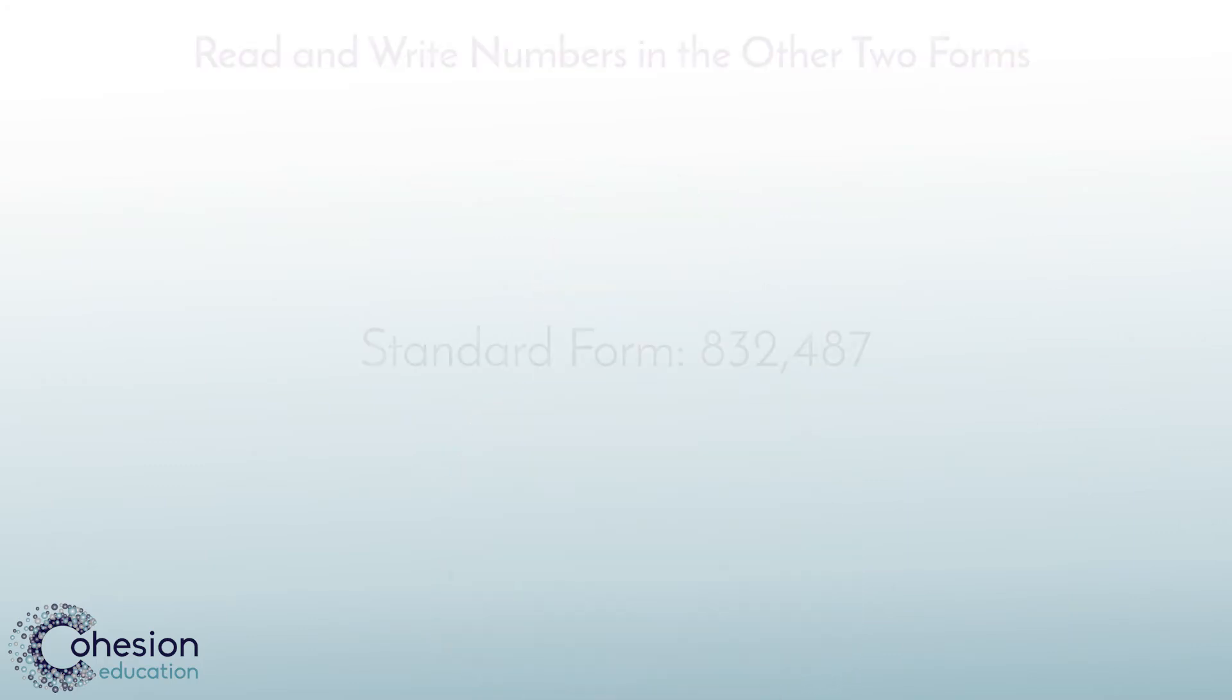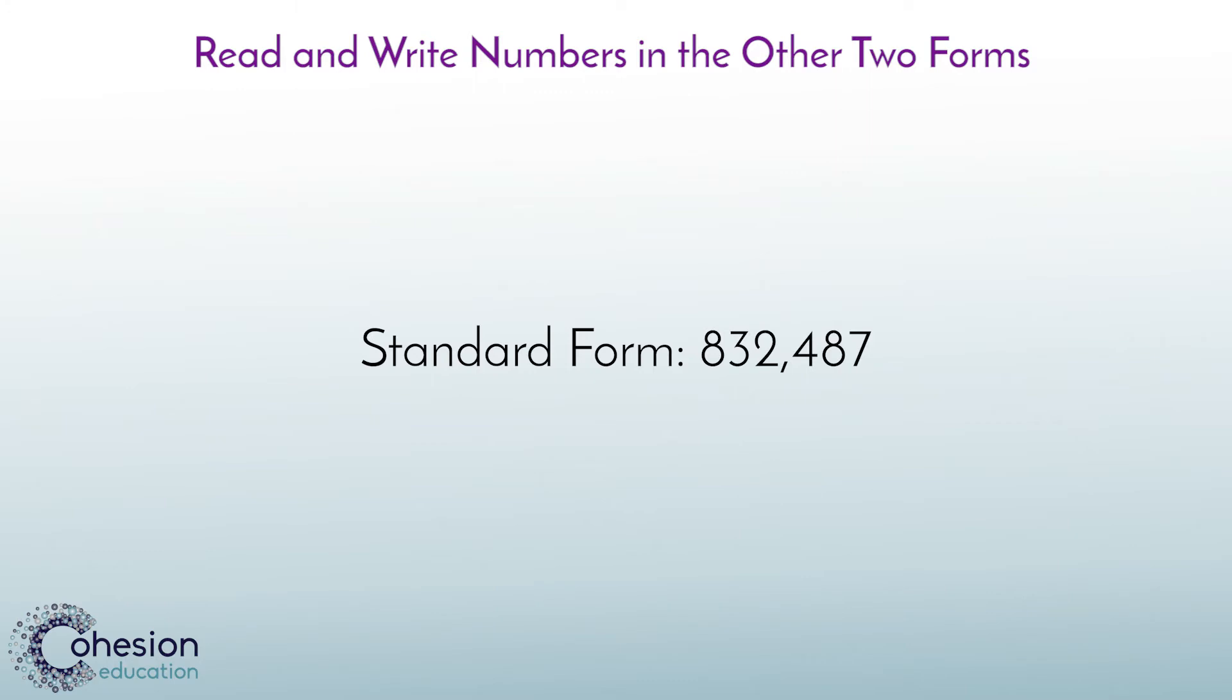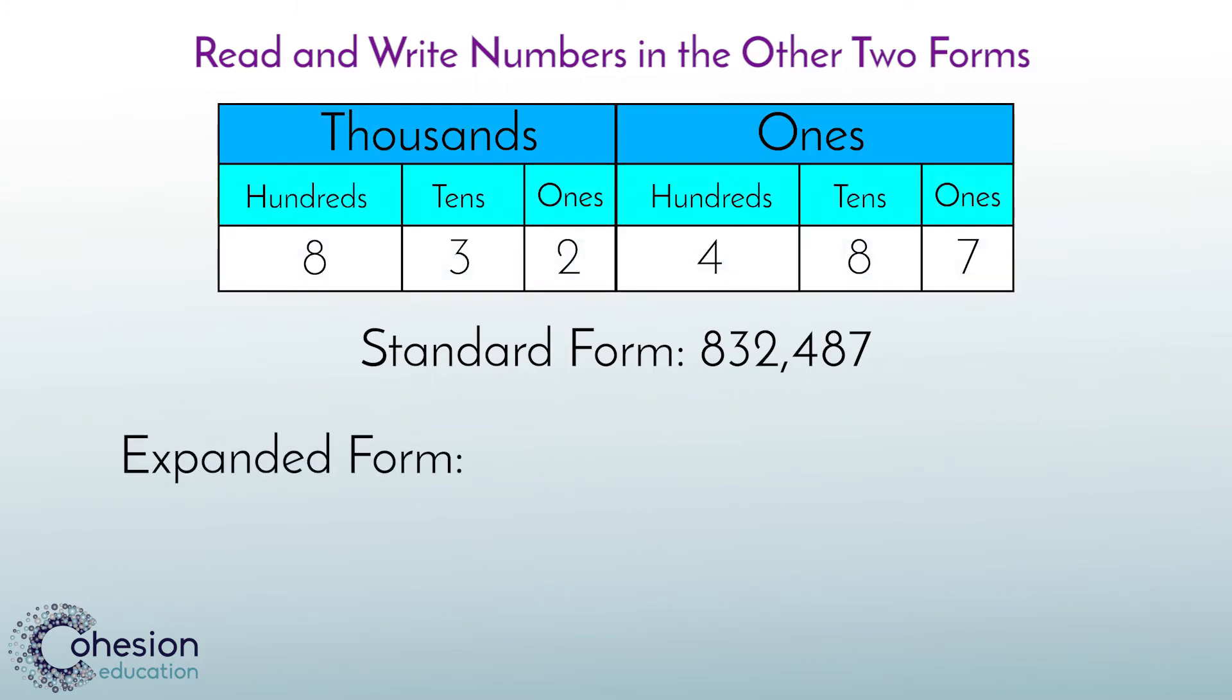Let's take a look at a couple questions students might see. In each question, they will be asked to read and write these numbers in two other forms. To convert 832,487 from standard to expanded, consider the place value chart. Observe the location and value of each digit.